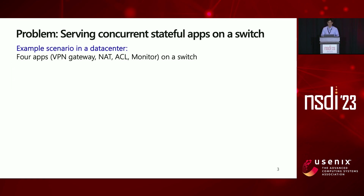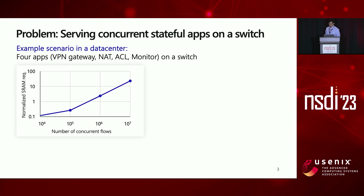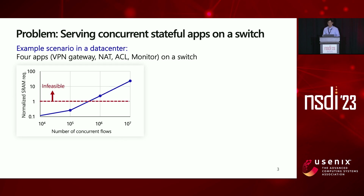Unfortunately, we observed that serving concurrent stateful applications on a switch is very challenging today. We emulate a scenario where a network operator wants to run four apps concurrently on a switch and see what limits the number of deployable apps. We first try to deploy all four apps while varying the number of flows that each app needs to serve. The y-axis represents the total SRAM requirement normalized to the total SRAM available on a switch. As you can see, we cannot deploy all four apps when the number of flows becomes larger than 100,000, which is a moderate size of workload.